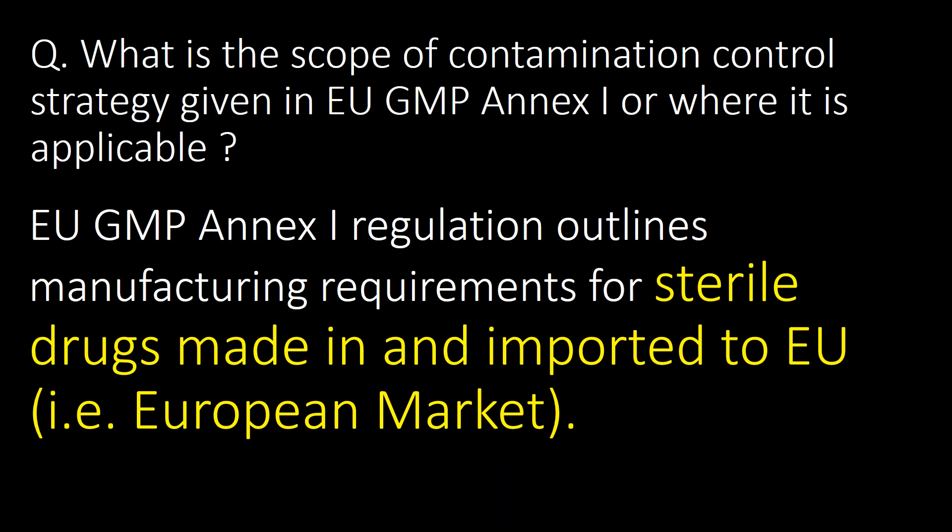What is the scope of contamination control strategy given in UGMP Annex 1, or where is it applicable? UGMP Annex 1 outlines manufacturing requirements for sterile drugs made in and imported to the EU — that is, the European market.